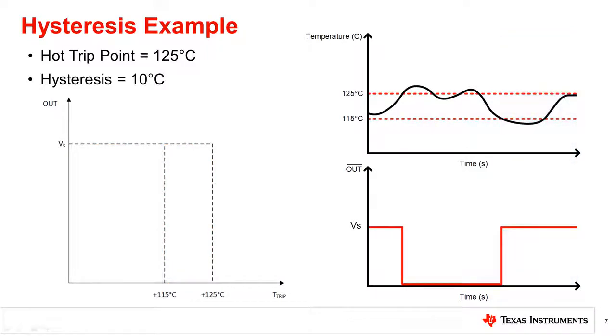Now consider a trip accuracy of plus or minus 0.2 degrees Celsius. In the worst case scenario, the temperature is sensed at 124.9 degrees Celsius, and the output will not trip. With the trip accuracy of plus or minus 0.2 degrees Celsius, the next sample shall yield 125.1 degrees Celsius, which will cause the output to trip.